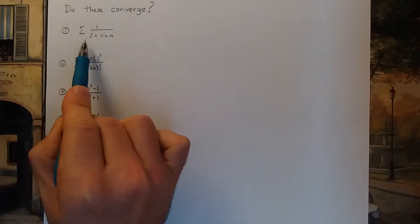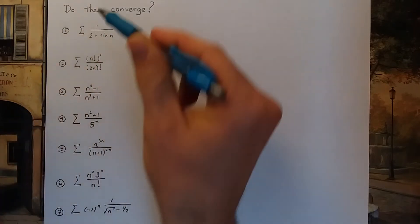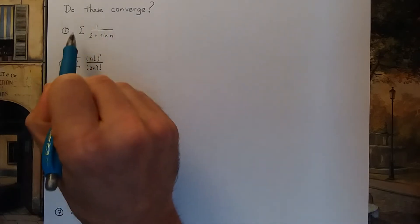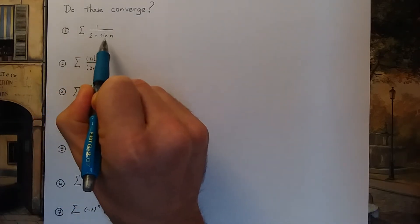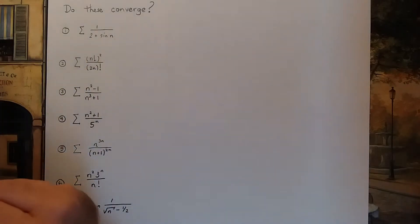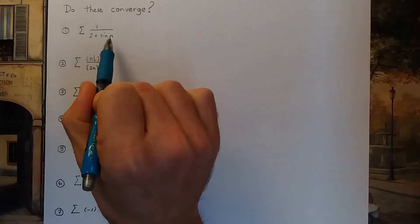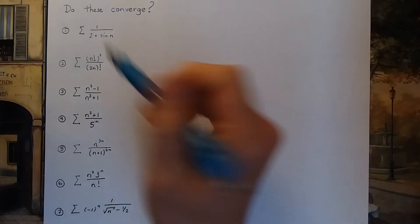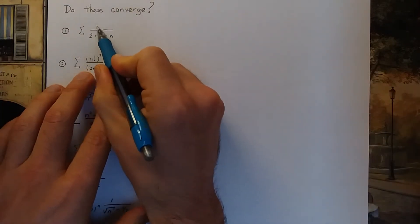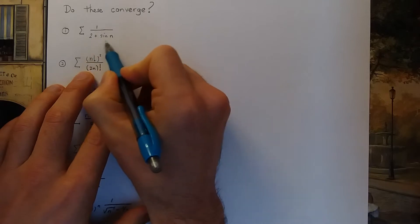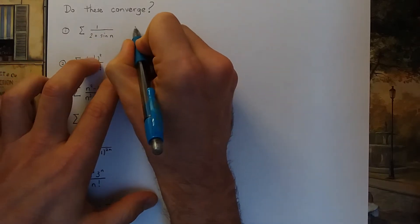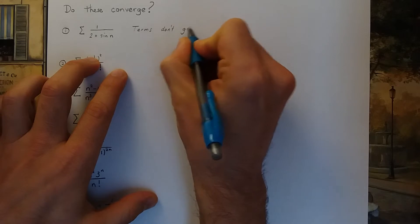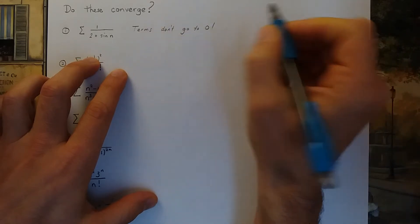First one: the sum of 1 over 2 plus sine n, going from n equals 0 to infinity. When I look at this, the first thing I'm thinking is: do the terms actually get smaller? If the terms don't get smaller and smaller, it has no chance of converging. These don't — the terms themselves don't get smaller. They're always bigger than or equal to 1. So this definitely diverges, because the terms don't go to 0.